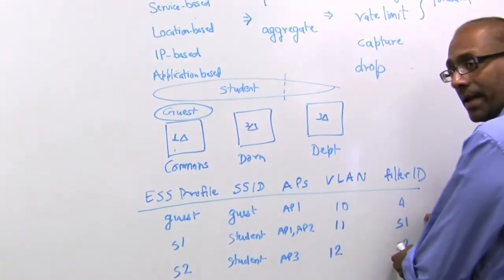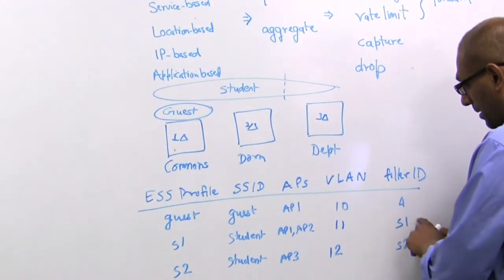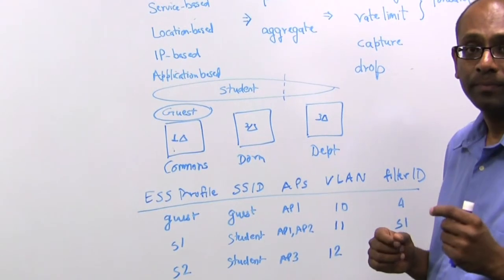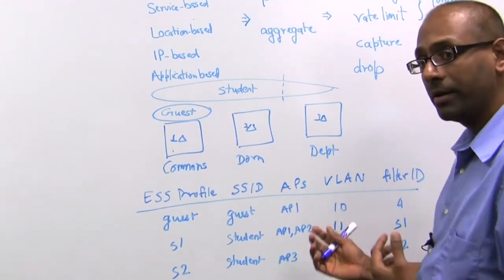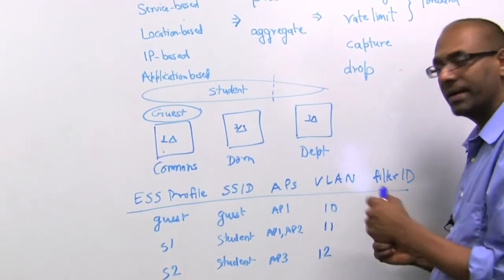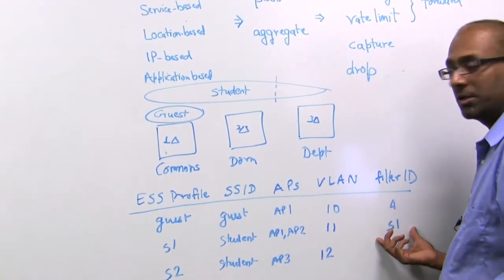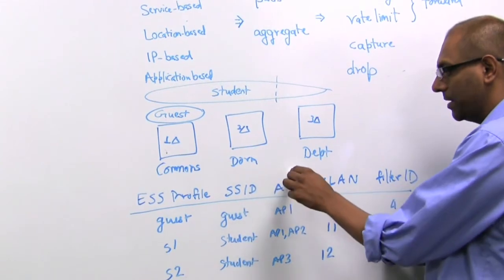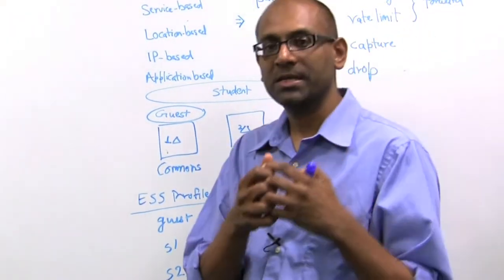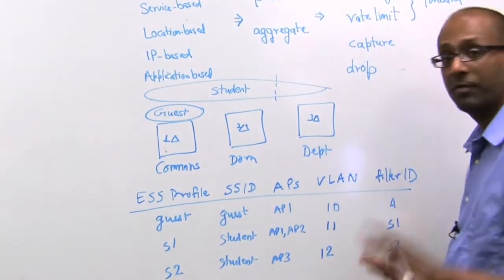but on the back end, depending upon where they are, they will get different filter IDs that are used for policy enforcement. So notice that what we've done here is essentially created these policy enforcement tags that are a function of the SSID and the location. It's a location plus service-based policy mapping that we've got so far.